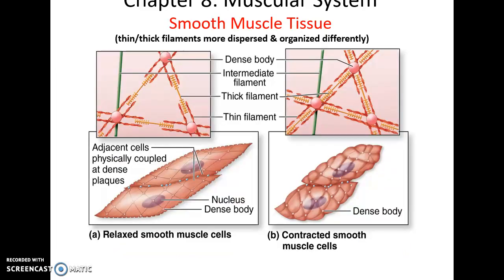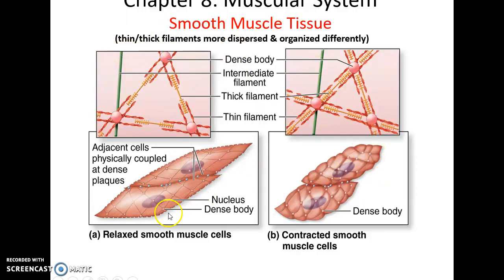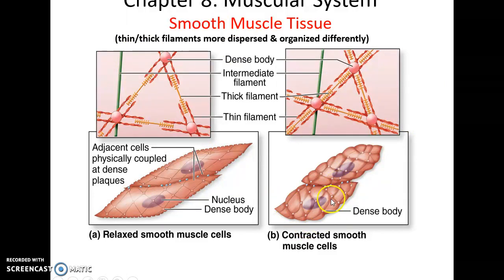Smooth muscle cells do not have myofibrils. Instead, their thick and thin filaments are arranged in a more dispersed pattern, attaching to dense bodies that connect to intermediate filaments, which then attach to the cell membrane. This allows smooth muscle cells to contract, but slowly and generating less force.